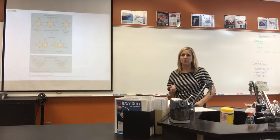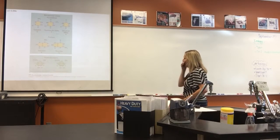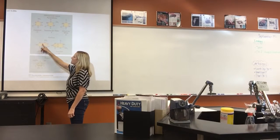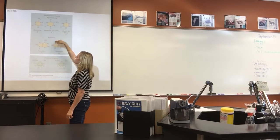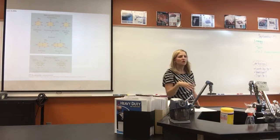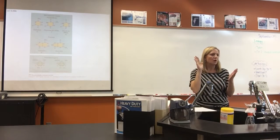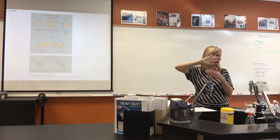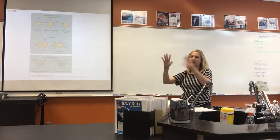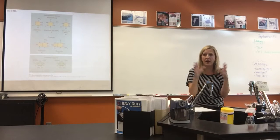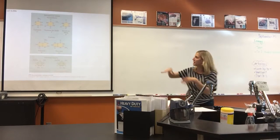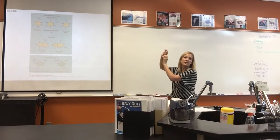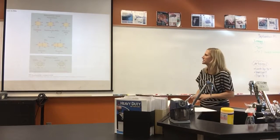Three of the bases have one ring and two have two fused rings. The single-ring ones are pyrimidines; the double-ring ones are purines. For the test, you don't need to classify pyrimidines or purines or identify which molecule is cytosine. What I do expect is that you could look at a nitrogenous base and identify it as such — it's a ring containing nitrogen.